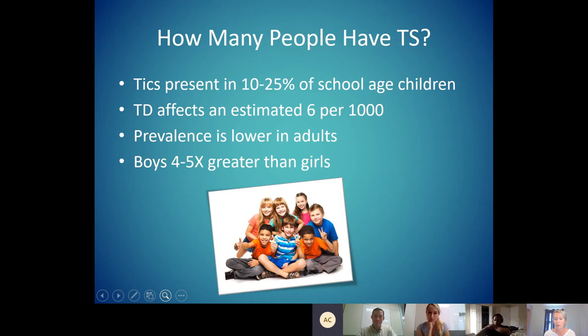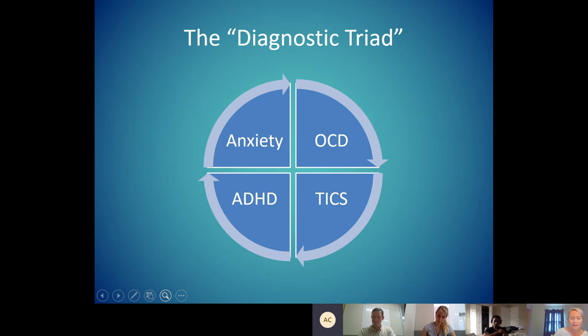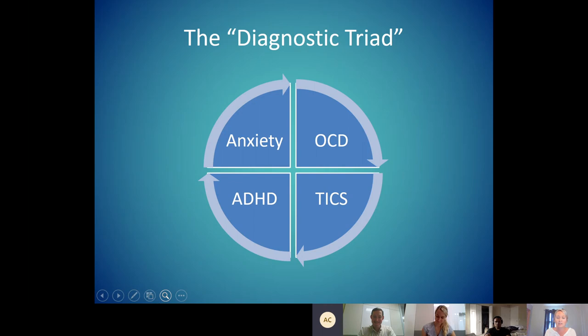Prevalence is lower in adults, and boys are four to five times more likely than girls to have tic disorder. Often we can do a pretty good job knowing if a child has a tic disorder if they have ADHD, anxiety, or OCD. If you have a patient in your office with ADHD symptoms and maybe a flavor of anxiety, you can bet your bank account that they probably have tics. This is considered the diagnostic triad — you really can't have two of these without three or four of these.